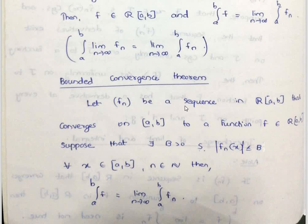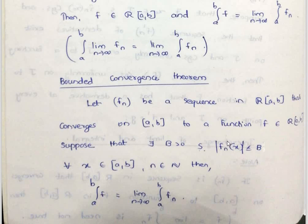Bounded convergence theorem: Let the sequence fn be a sequence in R[a,b] that converges on [a,b] to a function f in R[a,b]. Suppose there exists B greater than 0 such that |fn(x)| is less than or equal to B for all x in [a,b] and all n. Then the integral from a to b of f equals the limit as n tends to infinity of the integral from a to b of fn. The conditions are that fn and f are Riemann integrable on [a,b] and the sequence fn is bounded.